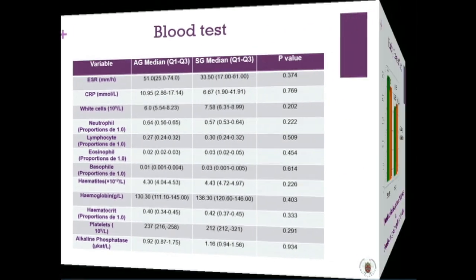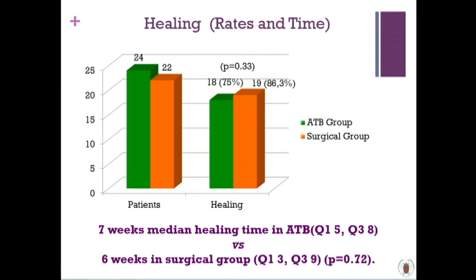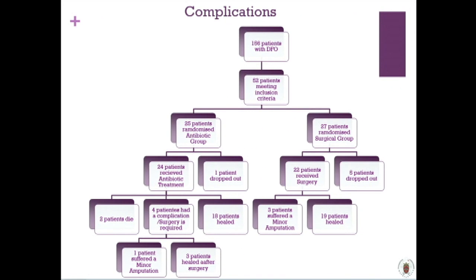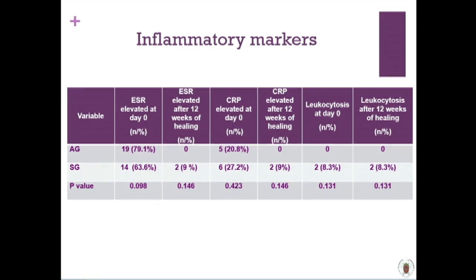Blood test results are shown. The primary outcome of our study was healing, defined by healing rate and time to healing. Results were similar in both groups: median healing time was seven weeks in the antibiotic group and six weeks in the surgical group. There was a statistically significant difference in healing rate: 75% in the antibiotic group and approximately 86% in the surgical group. Complications were similar in both groups with no significant differences. Inflammatory markers — ESR, CRP, and leukocyte count — were followed at day zero and at two weeks.